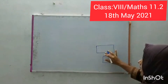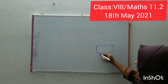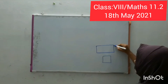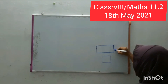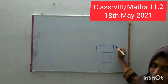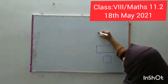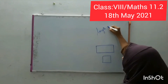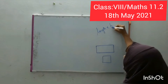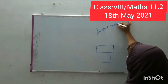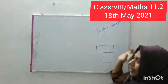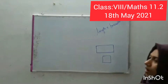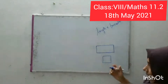The area is length into breadth. This is the length and this is the breadth. Length into breadth is the area of a rectangle.